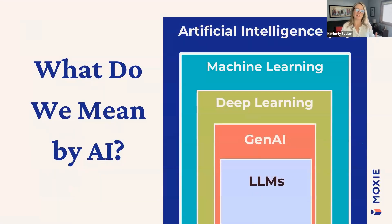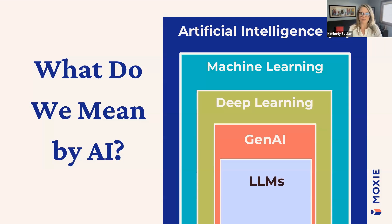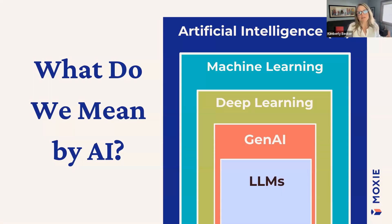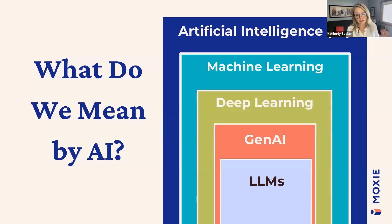Now we're going to give you our idea of what generative AI is, from the perspective of two people who are not computer scientists. I have had some training in natural language processing, but neither of us are AI experts — we call ourselves AI enthusiasts, self-taught for the most part. This slide shows the relationship between different levels of artificial intelligence. When people talk about AI, they often mean all the way down in the smallest box, which is LLMs or large language models, a form of generative AI. We also have machine learning and deep learning in there, and we have a YouTube channel where we go into depth on all of these.